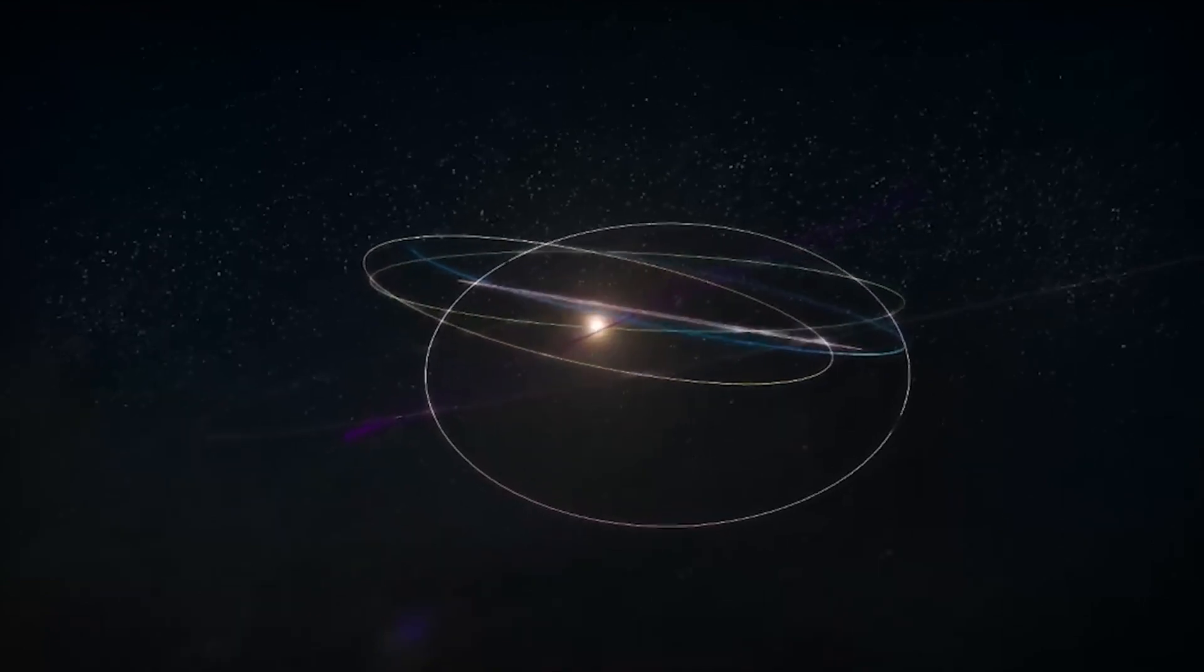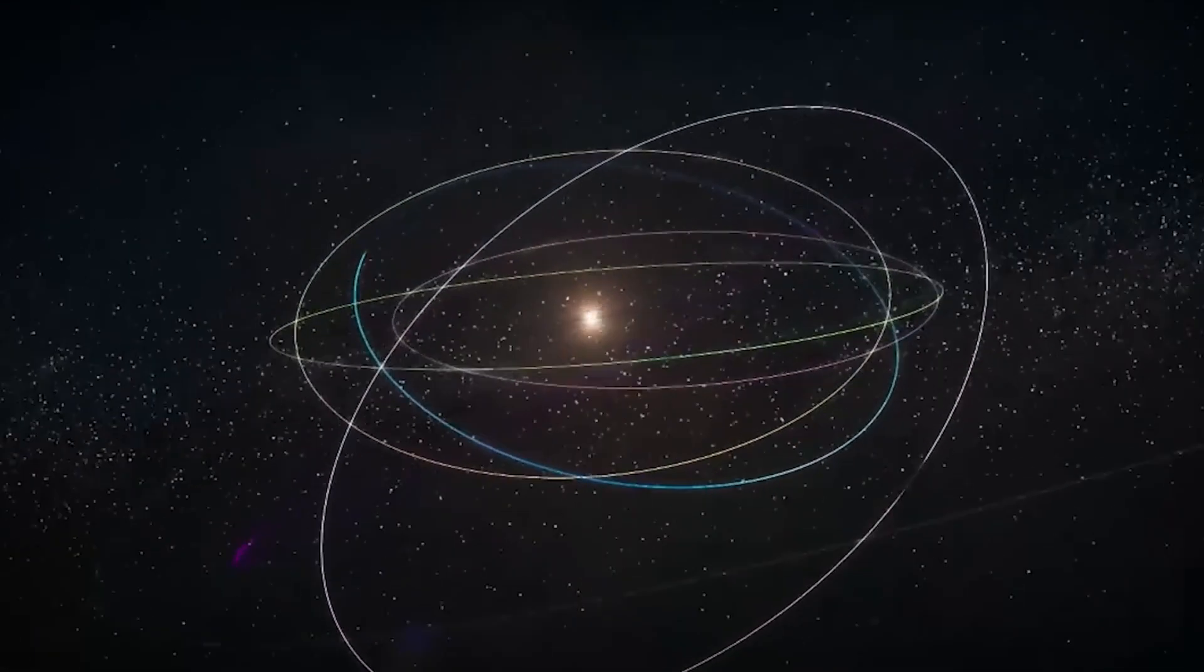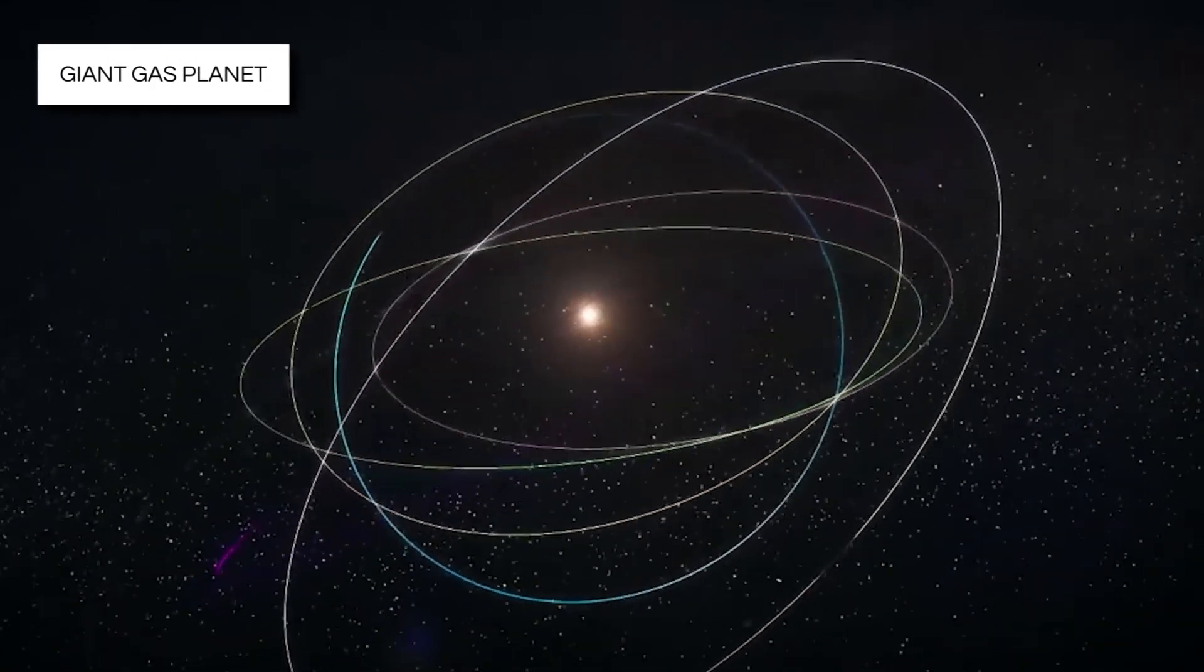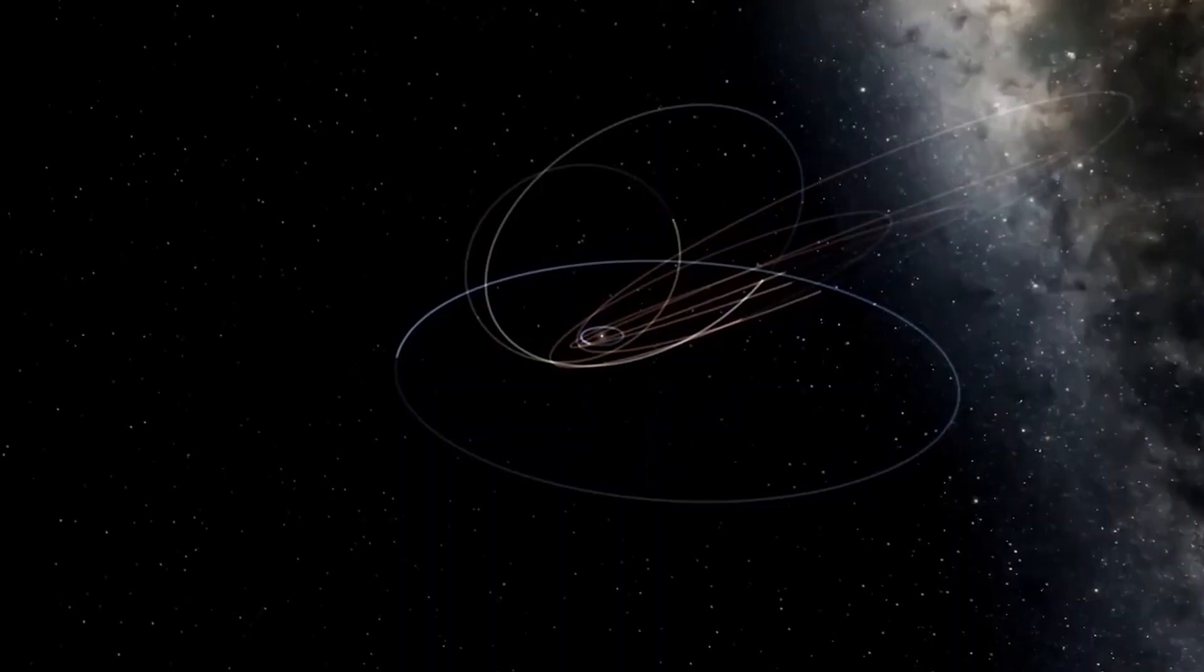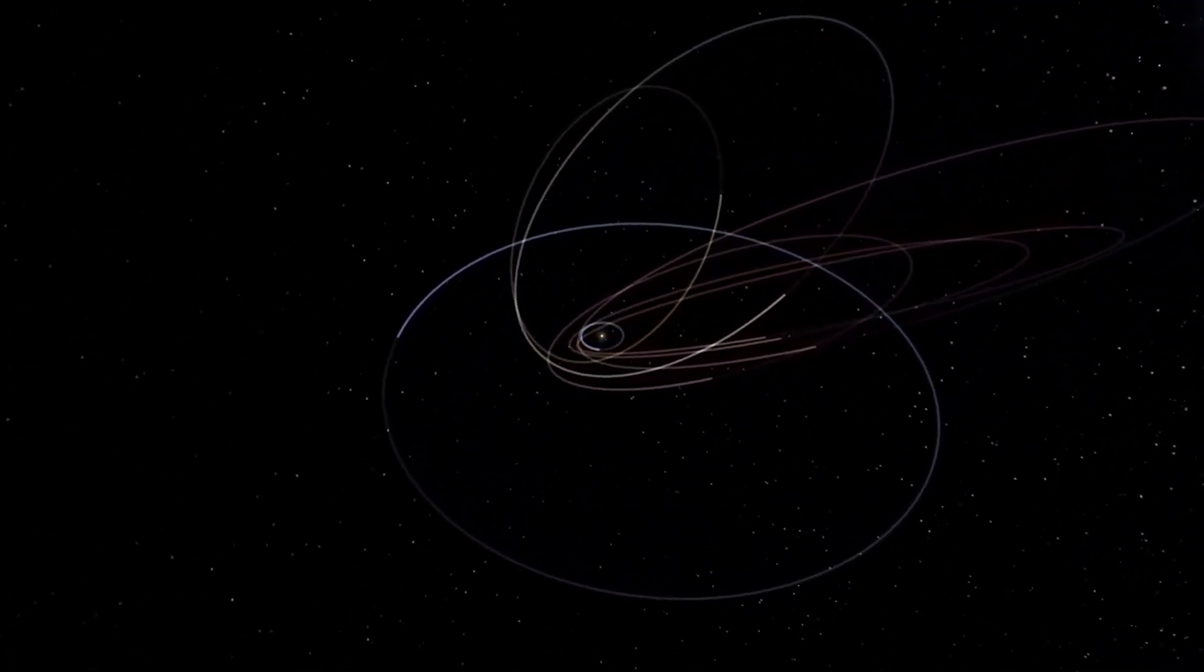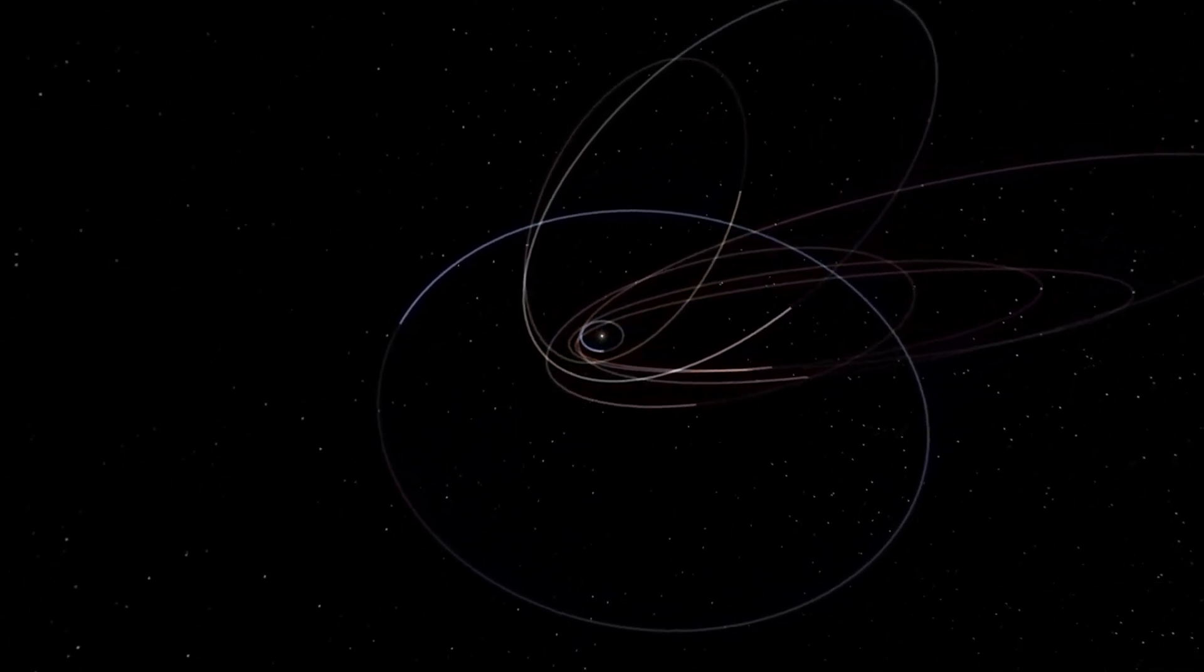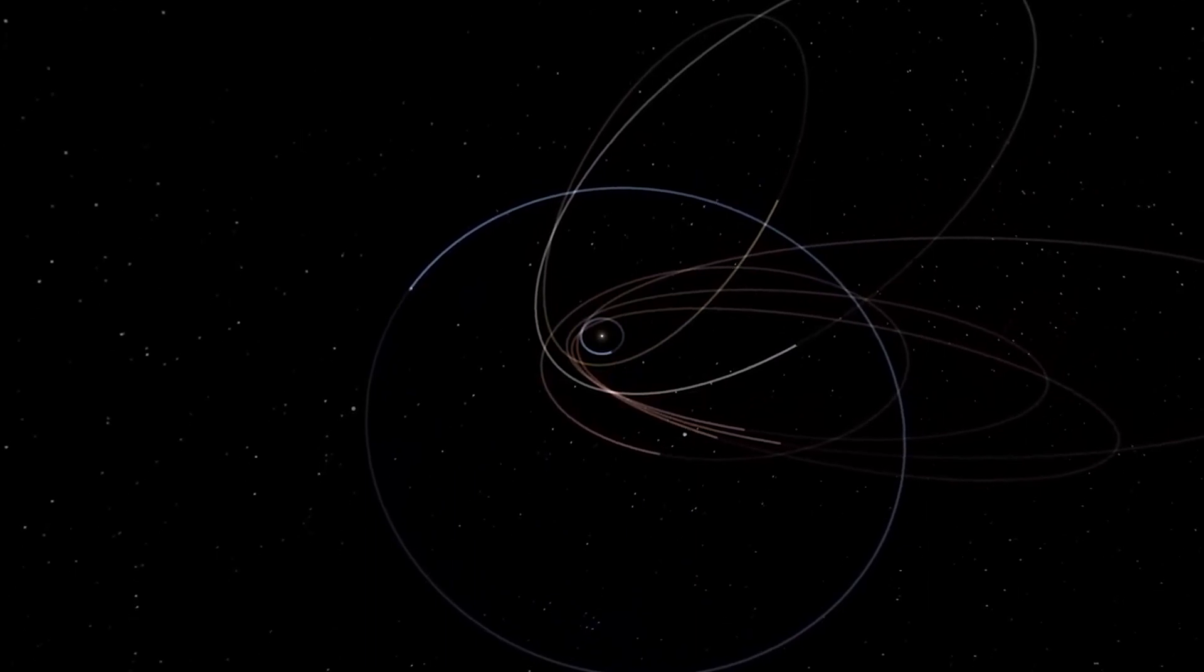Their new theory suggests that if Planet 9 exists, it might not be as huge as we thought. Instead of a giant gas planet, it could be a smaller, frozen world. Maybe only a few times the mass of Earth. And it might not be as far from the Sun as we previously imagined, possibly just a few hundred times the distance between the Earth and the Sun.